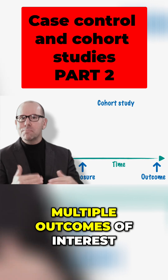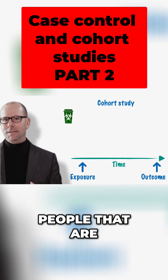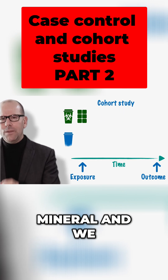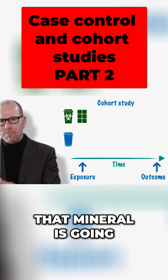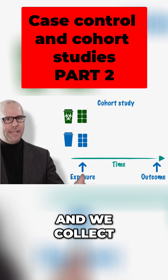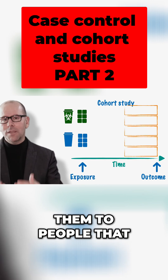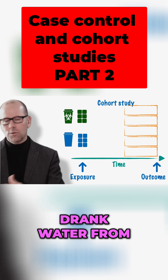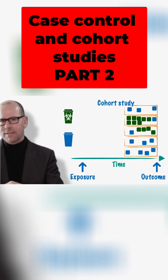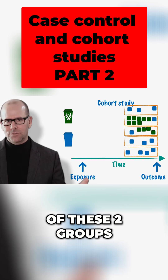Interestingly, you can have multiple outcomes of interest. For example, there might be people drinking water from a water source that contains a particular mineral, and we don't know what that mineral is going to do. So we follow that group of people over time, collect data about what happens in terms of their health outcomes, and compare them to people that drank water from a different source where that particular mineral or hazard wasn't present. And we compare the outcomes of these two groups.